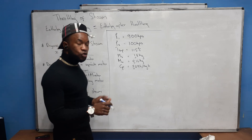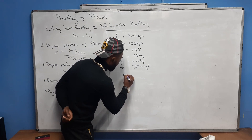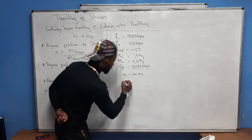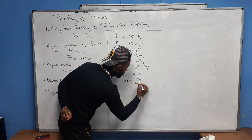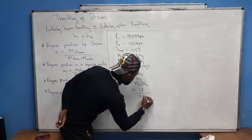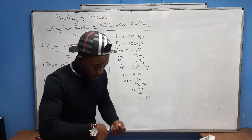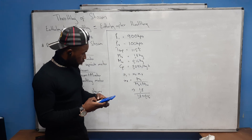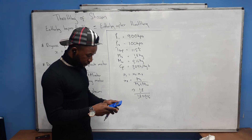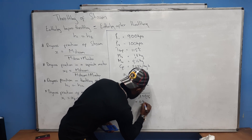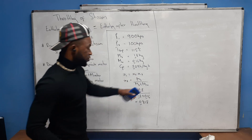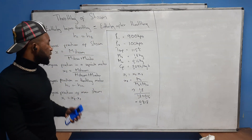To get the dryness fraction of the main steam: x1 = x2 × x3. We don't have x2 or x3 yet, but I can calculate x2 using mass of steam divided by mass of steam plus mass of water: x2 = 1.8 ÷ (1.8 + 0.16), which gives x2 = 0.9184. Now I need to calculate x3.